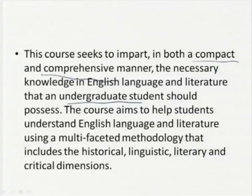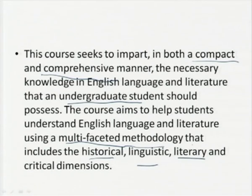Further, the course aims to help students understand English language and literature using a multifaceted methodology that includes the historical, the linguistic, the literary, and the critical dimensions. So the course is aimed to be both compact and comprehensive, aimed at the undergraduate student, using a methodology that touches upon historical, linguistic, literary, and critical dimensions.